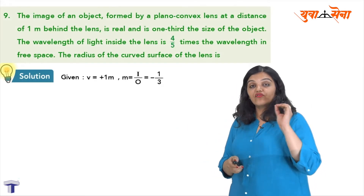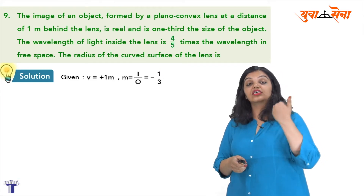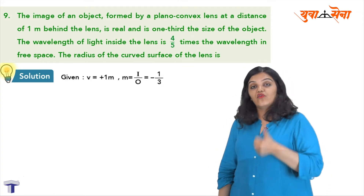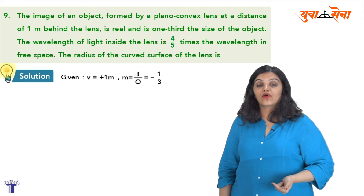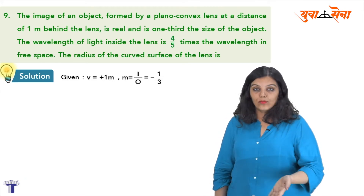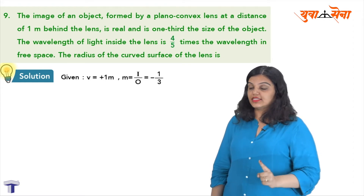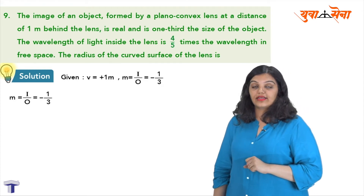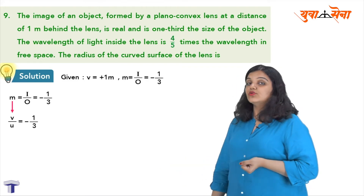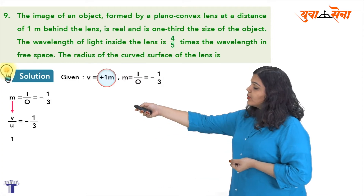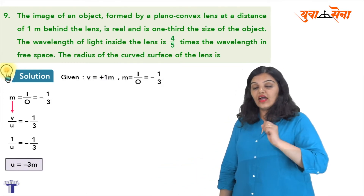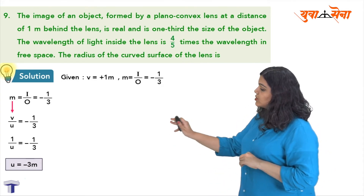The question asks for the radius of curvature, so I need to use the Lensmaker's formula. But first I need the focal length and refractive index. To find focal length I need the object distance. Using magnification: m equals v upon u equals minus 1 upon 3. Since v equals plus 1 meter, I get 1 upon u equals minus 1 upon 3, giving u equal to minus 3 meter. So the object distance u equals minus 3 meter.